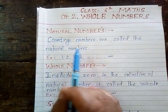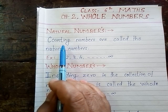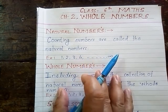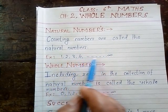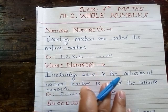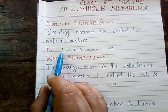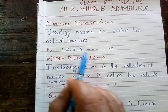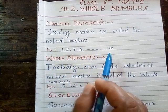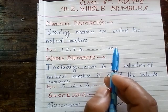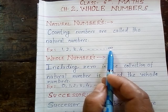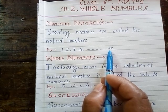The first point is natural numbers. As you know very well, counting numbers are called the natural numbers. For example, 1, 2, 3, 4, up to infinite. In these examples, 1 is the smallest natural number and we cannot find the biggest natural number. So in place of the biggest natural number, we apply one symbol that stands for infinite or undefined value.